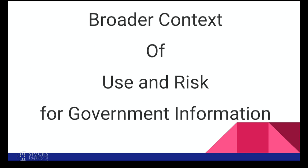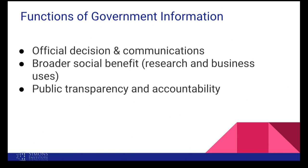So what's the broader context of use and risk for government information? We tend to think about the direct decisions—the official decision in communication and the trade-off between the social value of setting the apportionment right versus revealing information about individuals. But there are two other types of functions of government information that are also very important: research and the broader social benefit from research and business uses, and public transparency and accountability—understanding how the information was produced, being able to replicate and verify.